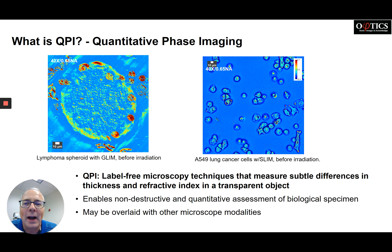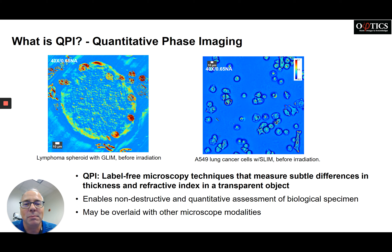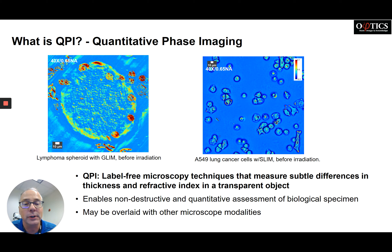What is QPI — quantitative phase imaging? Quite simply, it is a label-free microscopy technique that measures subtle differences in the thickness and refractive index of a transparent object as light passes through it, enabling non-destructive analysis and quantitative assessment of biological specimens.